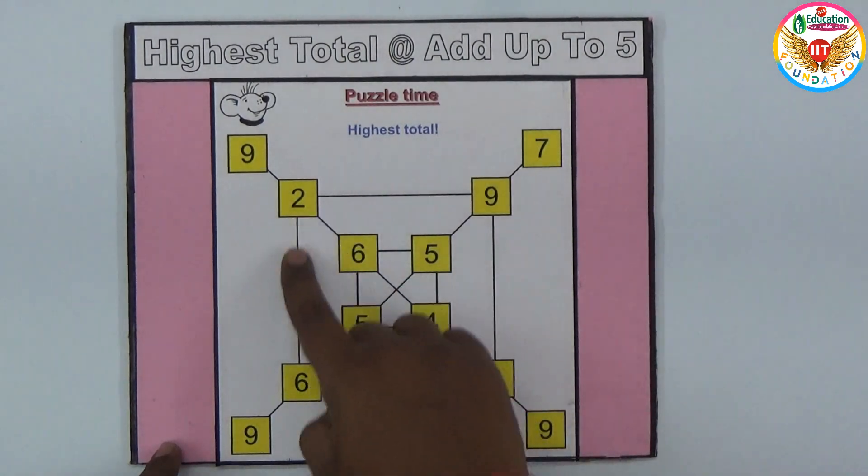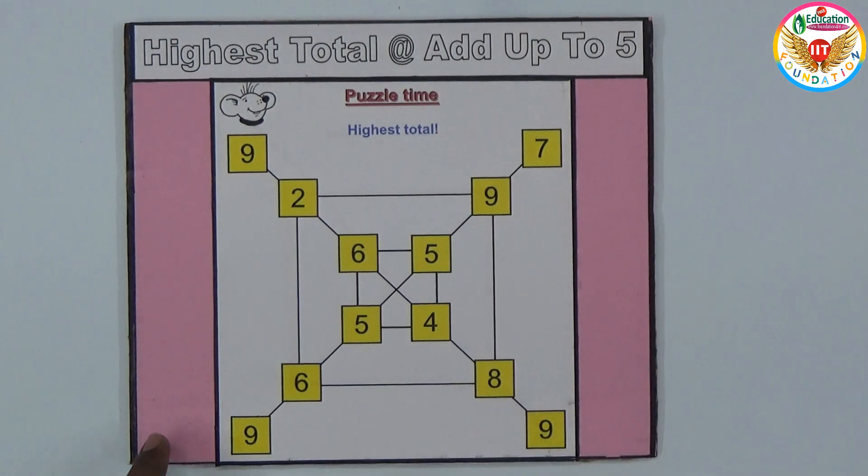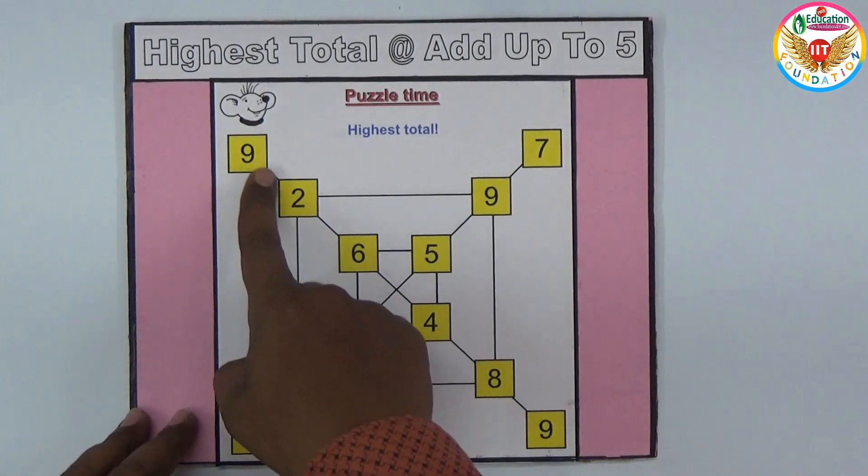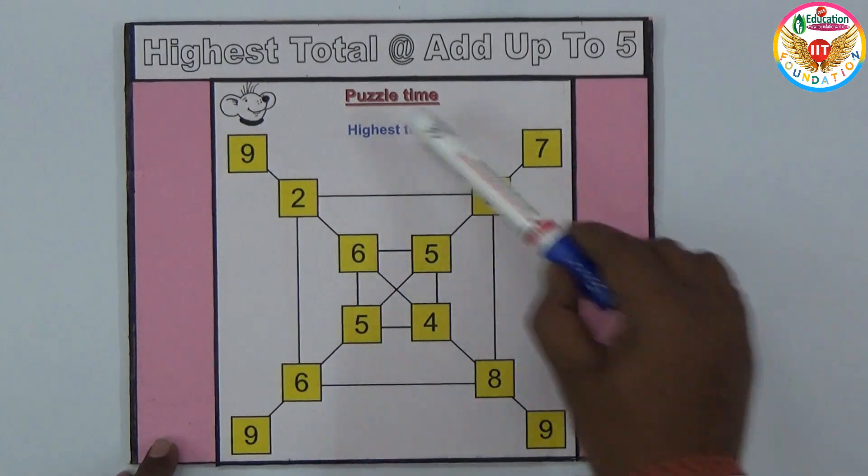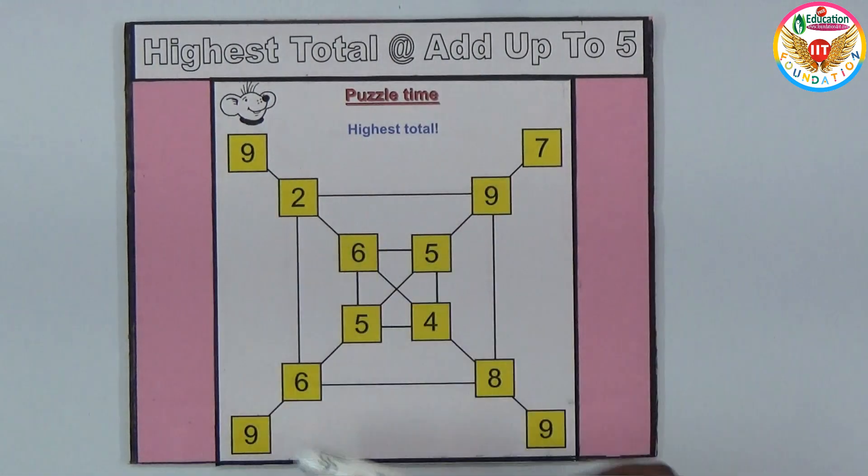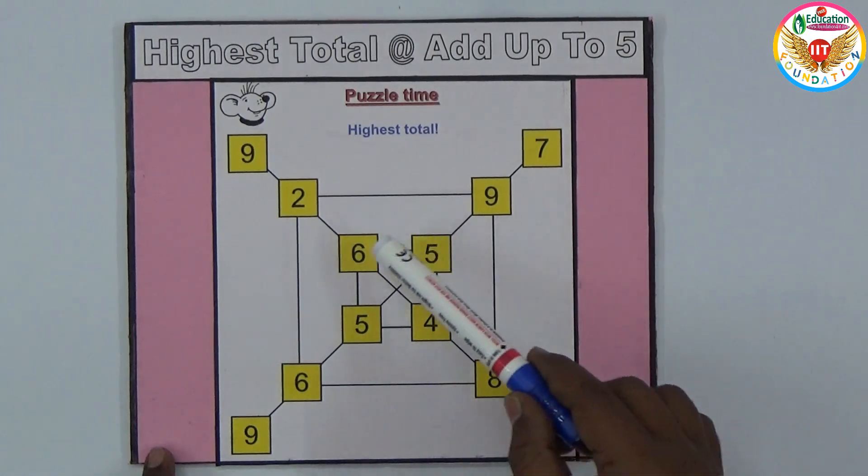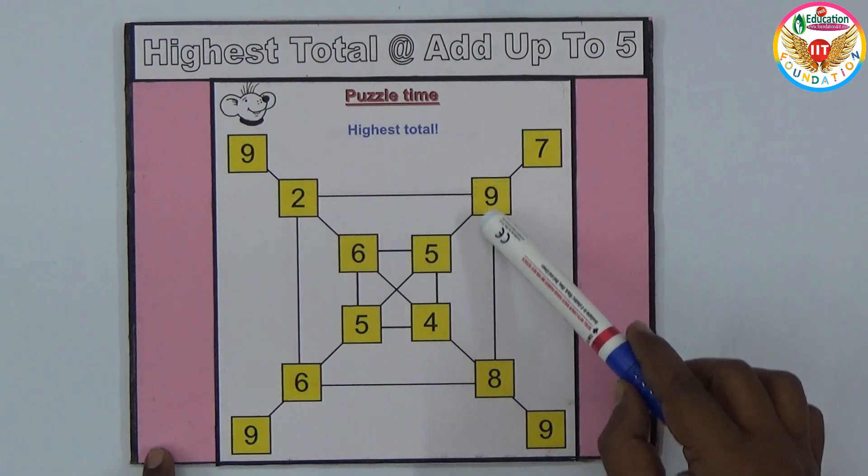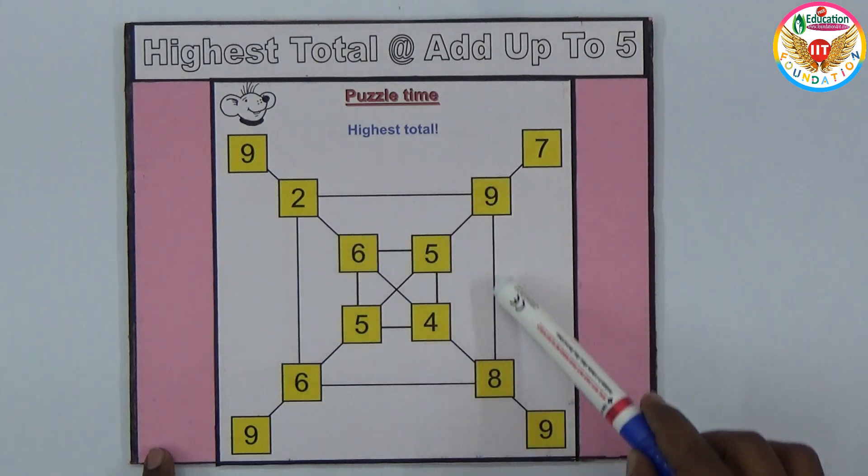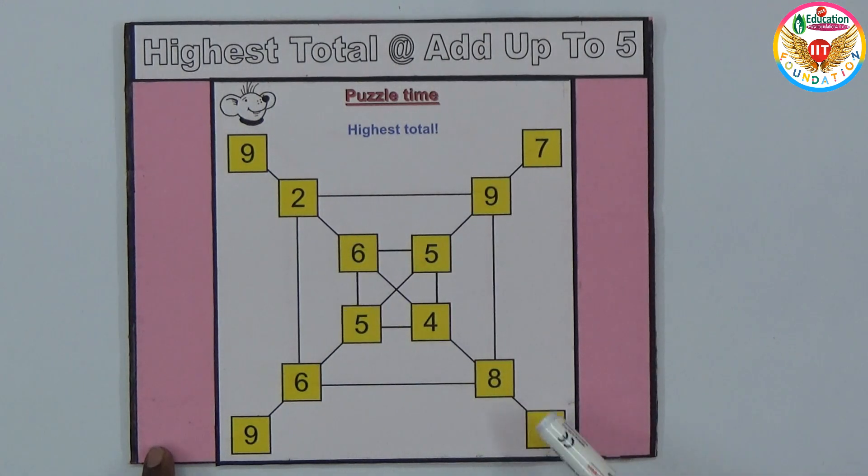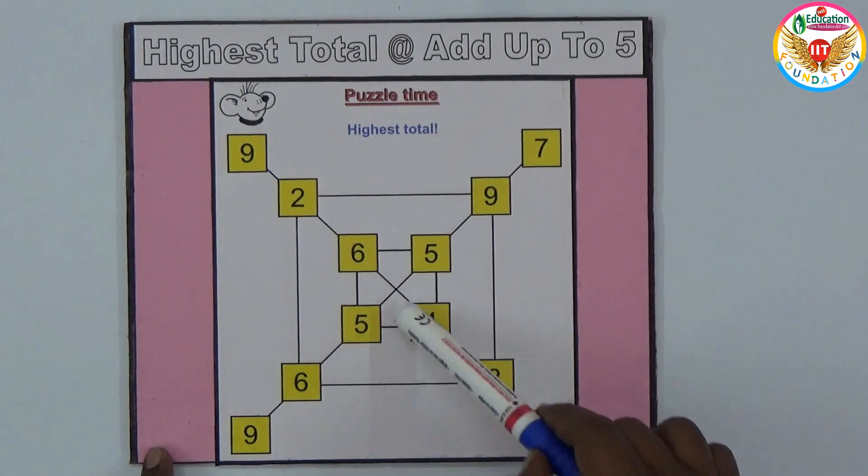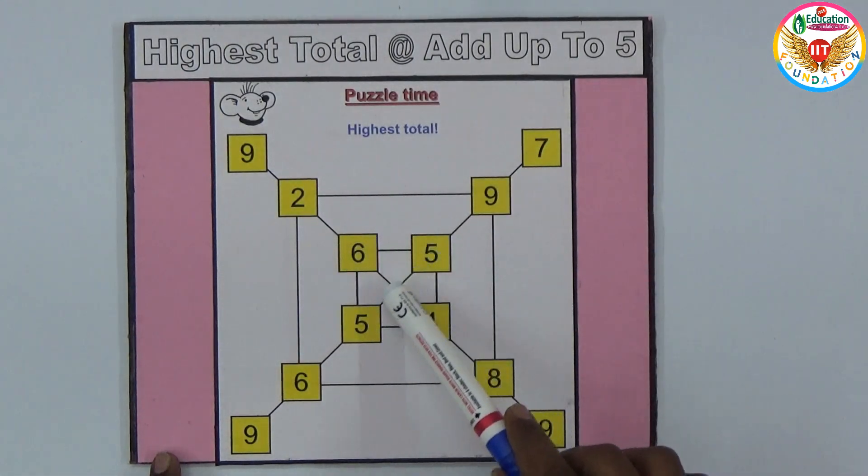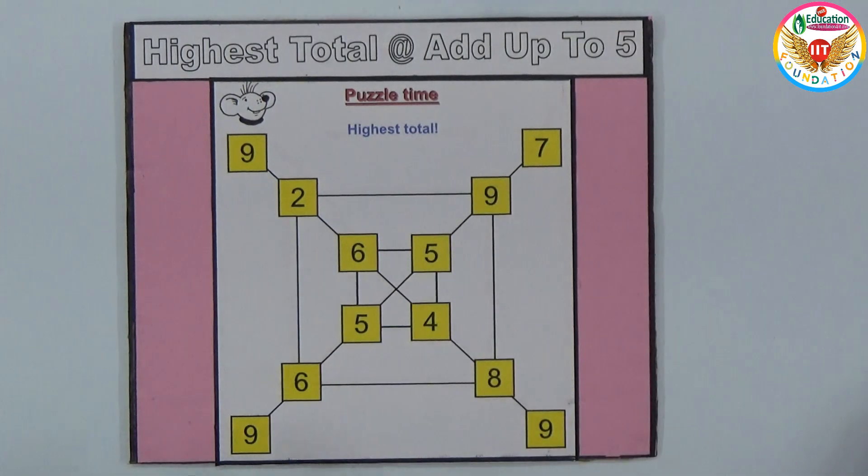For example, I took one thread. According to this line only we should move. You can start anywhere in this box. If I start with 6, then 6 to 5, 5 to 9, 9 to 8, on this line only we need to go and count. We should not jump over. According to the lines only you can go, either straight or on these connecting lines.